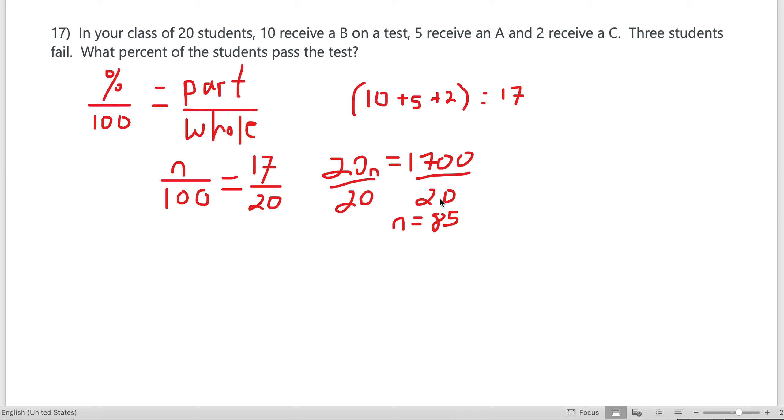10 plus 5 plus 2, out of the whole class which is 20. We cross multiply: 20n = 1700. Dividing by 20, we get n is 85. There are 20 questions on your test, 17 questions on your pre-test—obviously some had multiple parts.